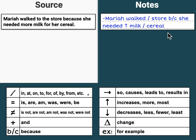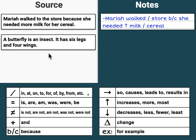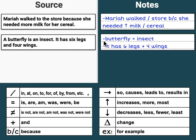A butterfly is an insect. It has six legs and four wings. Here we have a note for each sentence, beginning with a little dash: 'Butterfly = insect' and 'It has six legs and four wings.' However, remember, one of our goals with notes is to be more concise. So while this is fine when you're starting out, as you continue your note-taking, you can be more concise — for example: 'Butterfly = insect with six legs and four wings.' You notice here we have our two sentences combined into one note. This is our goal.